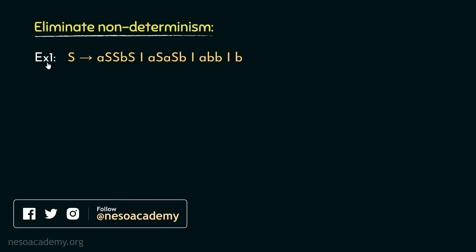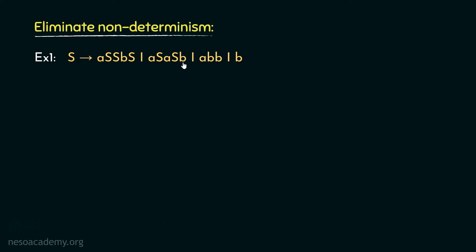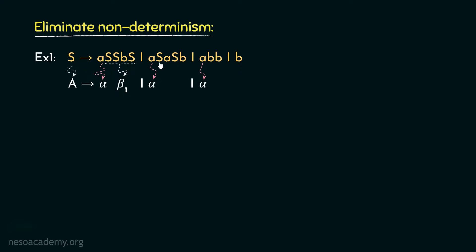Consider the first example: S can be rewritten as ASSBS, or ASASB, or ABB, or just B. If we consider the non-terminal S as our generic non-terminal A and observe the production rules, in these three, the A's are the common prefix or the alphas. Therefore, SSBS would be beta1, SASB would be beta2, and BB is going to be beta3.